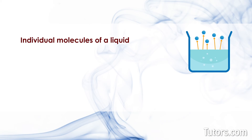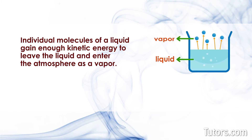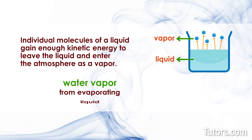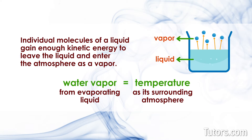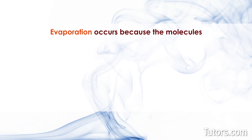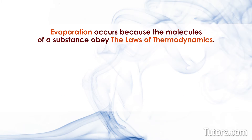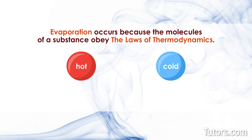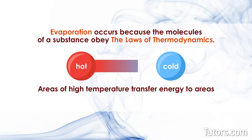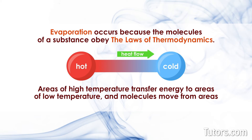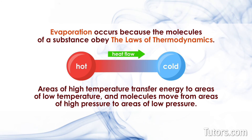In evaporation, individual molecules of a liquid gain enough kinetic energy to leave the liquid and enter the atmosphere as a vapor. Water vapor from an evaporating liquid has the same temperature as its surrounding atmosphere, unlike steam from boiling. Evaporation occurs because the molecules of a substance obey the laws of thermodynamics — areas of high temperature transfer energy to areas of low temperature, and molecules move from areas of high pressure to areas of low pressure.